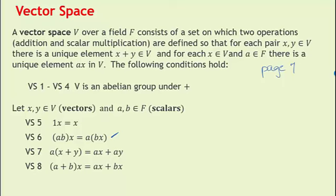Vector space property 7 says that if you are multiplying a scalar a to a sum of two vectors, you can either add the vectors first and then multiply, or you can multiply and then add — it's a type of distributive property. And so is property number 8: if you are multiplying the sum of two scalars to a vector x, you can add the scalars and then multiply, or multiply each to the vector x and then add in the vector space.